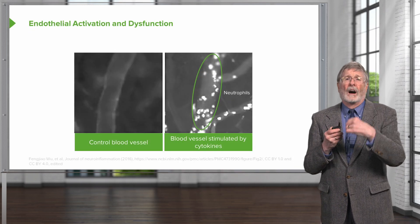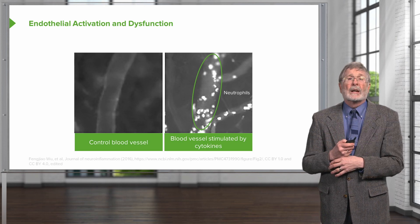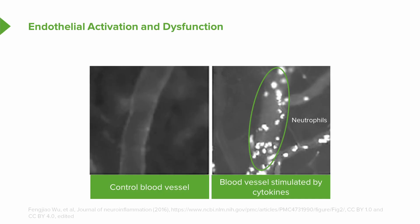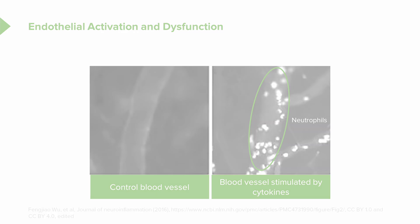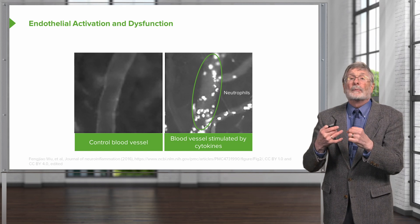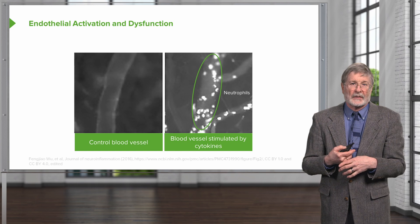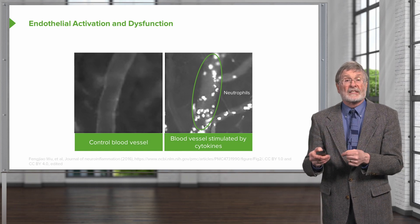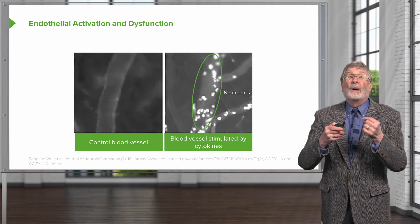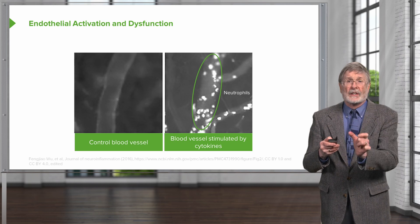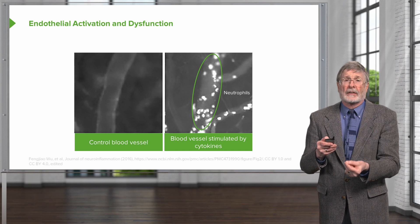As an example: in this image, a control blood vessel that is not inflamed shows fluorescently labeled neutrophils that do not stick to the vessel wall. On the right-hand side, when those same blood vessels are stimulated with inflammatory cytokines — interleukin-1, tumor necrosis factor, or cholesterol byproducts — the endothelium becomes activated and dysfunctional, suddenly recruiting a large number of neutrophils, which release inflammatory mediators and begin to drive atherosclerosis development. Endothelial activation and dysfunction are clearly the upstream drivers of atherosclerosis.